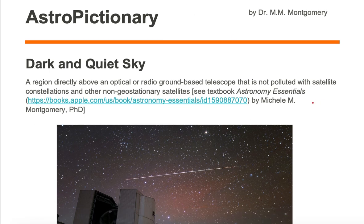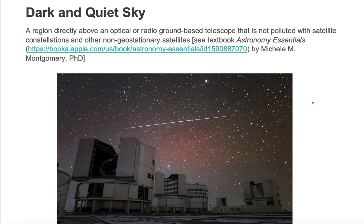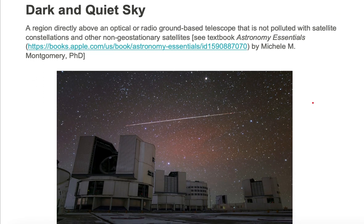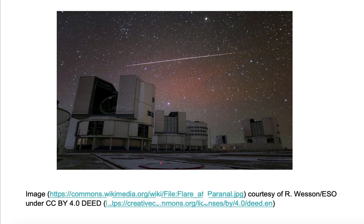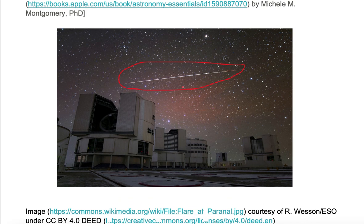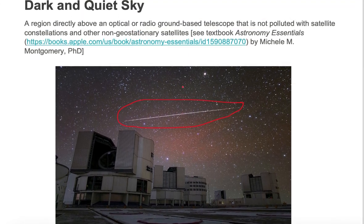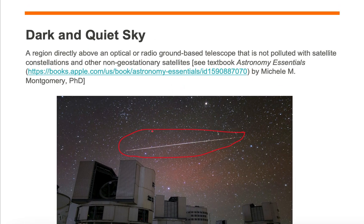Let's take a look at an example of a sky that is not dark and quiet. Here we're looking at an observatory. Directly above the observatory in this night sky is a streak of light. The light is mostly reflected sunlight, bouncing off a non-geostationary satellite.